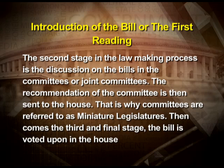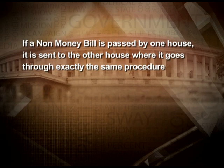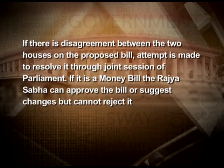The second stage in the law-making process is the discussion of the bill in committees or joint committees. The recommendation of the committee is then sent to the house — that is why committees are referred to as miniature legislatures. Then comes the third and final stage: the bill is voted upon in the house. If a non-money bill is passed by one house, it is sent to the other house where it goes through exactly the same procedure. A bill has to be passed by both houses for enactment. If there is disagreement between the two houses, an attempt is made to resolve it through a joint session of parliament.